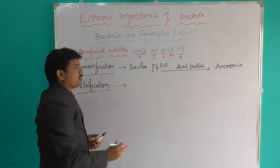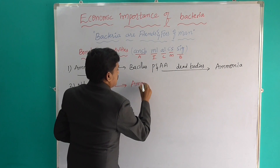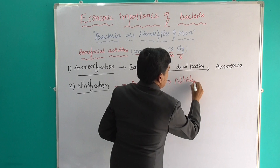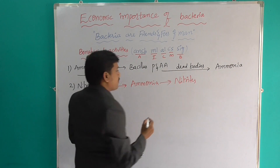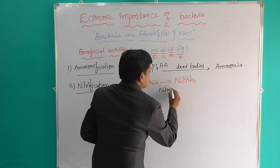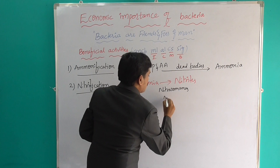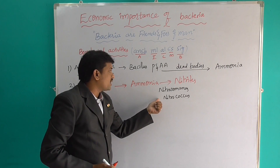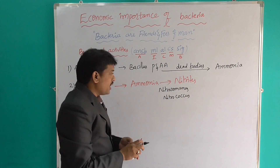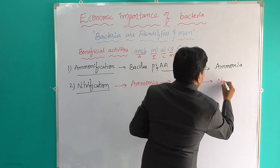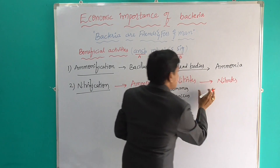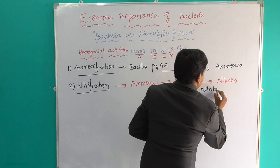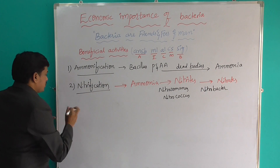The second beneficial activity is nitrification. In nitrification, ammonia is converted into nitrites and then into nitrates. With the help of Nitrosomonas and Nitrococcus bacteria, ammonia is converted into nitrites. After that, the conversion of nitrites into nitrates is done by the bacteria Nitrobacter. So Nitrosomonas, Nitrococcus, and Nitrobacter are involved in nitrification.